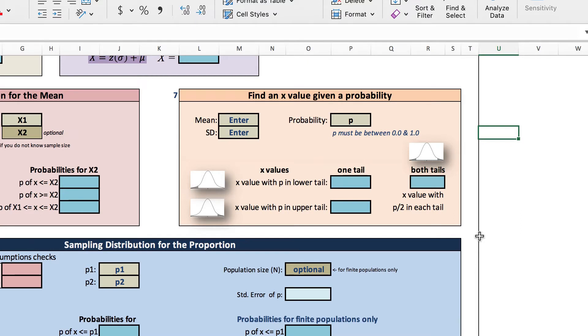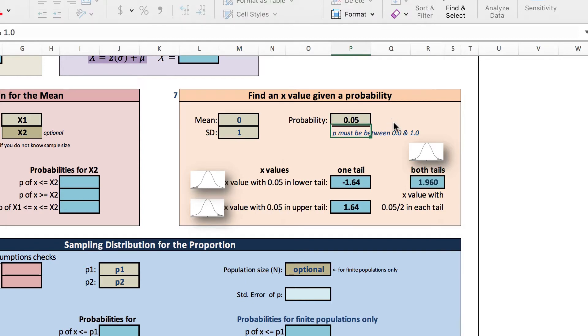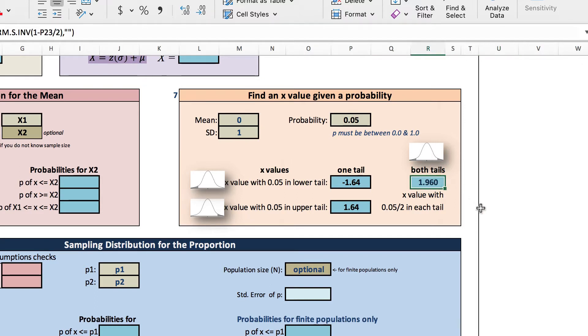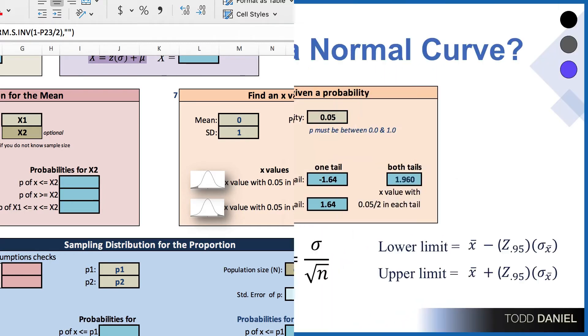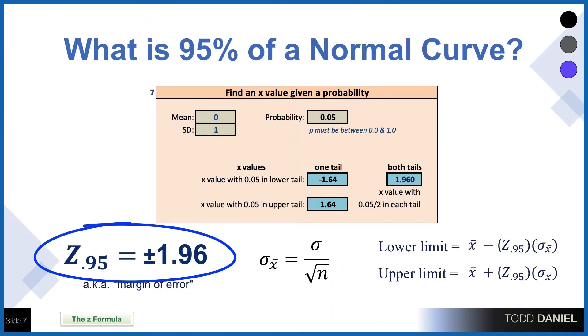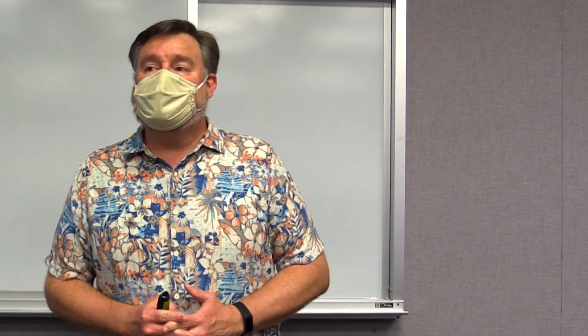We want the cutoff score for 95% of the population — that's 95% within the range, leaving 5% split between each of the two tails: 2.5% in the upper and 2.5% in the lower tail. Using a standard normal curve with a mean of 0 and a standard deviation of 1, we enter a probability of .05. We find that the x value is 1.96, described as Z sub .95 equals positive or negative 1.96. In a normal distribution, 95% of scores are bounded by ±1.96 standard deviations.